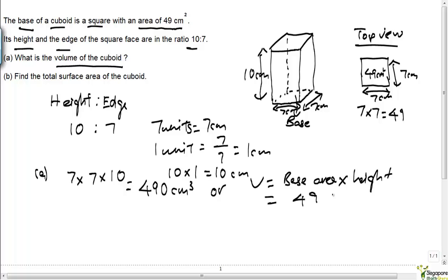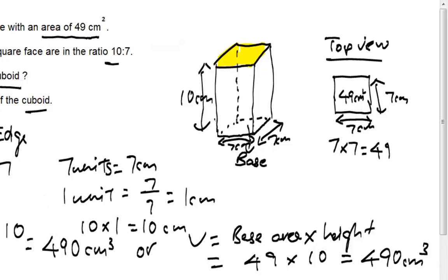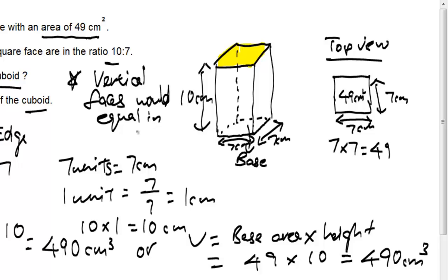Now for the total surface area of the cuboid — because the base is a square, all the vertical faces are equal in area. Do take note: vertical faces would be equal in area. So for the total surface area of the cuboid, we need four vertical faces and two times the base area.